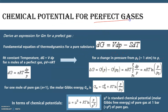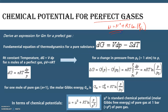Now, what is the chemical potential for a perfect gas? We have been using the equation μ = μ° + RT ln(P/P°). We will now try to derive this expression, which holds true for a perfect gas.